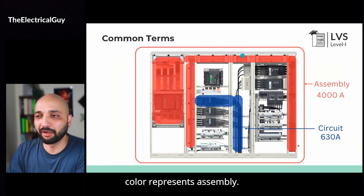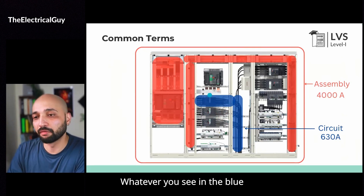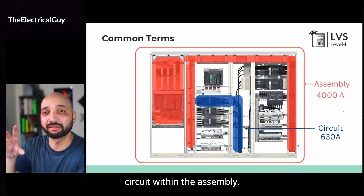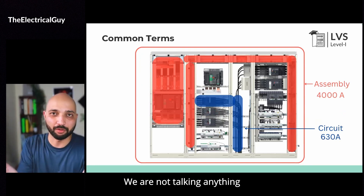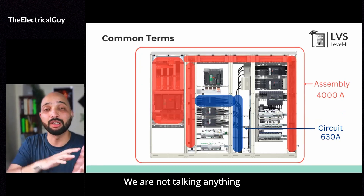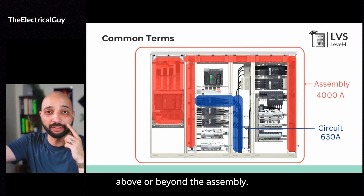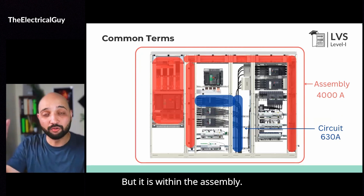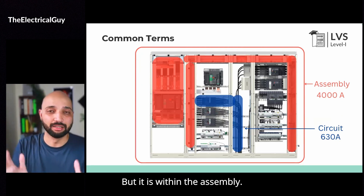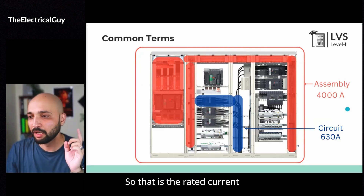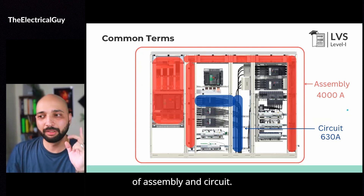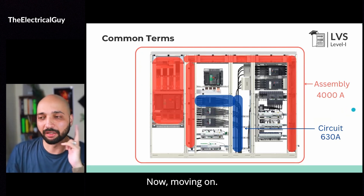Whatever you see in the red color represents the assembly. Whatever you see in the blue color represents a dedicated circuit within the assembly. We are not talking about anything above or beyond the assembly — it is within the assembly. So that is the rated current of assembly and circuit.